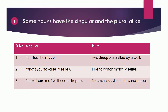Point 1: Some nouns have the singular and plural alike — it means the singular and plural are the same for these nouns. For example, 'sheep': singular — 'Tom fed the sheep'; plural — 'Two sheep were killed by a wolf.' 'Series': singular — 'What's your favorite TV series?'; plural — 'I like to watch many TV series.' 'Cost': singular — 'The saree cost me 5000 rupees'; plural — 'These sarees cost me 1000 rupees.' We can see that some nouns have singular and plural alike.